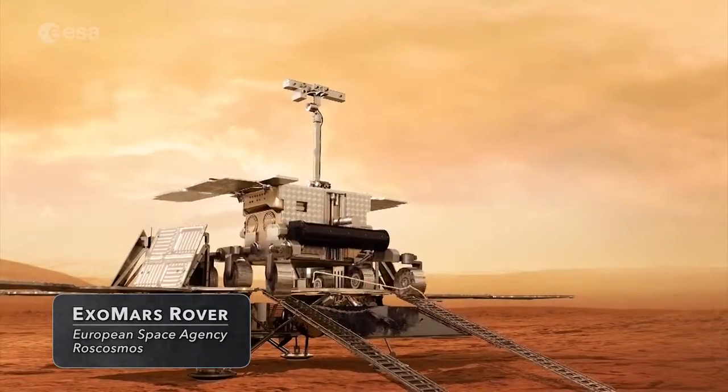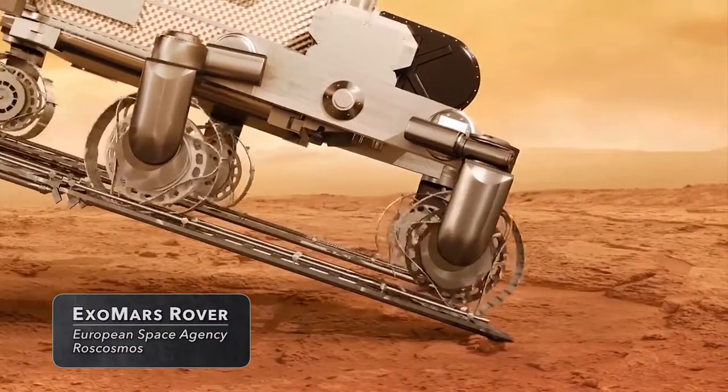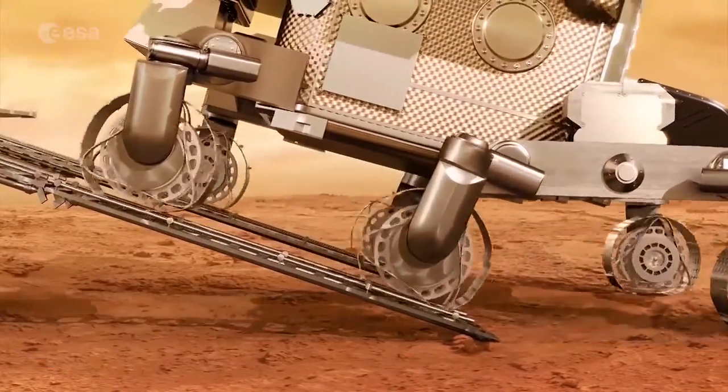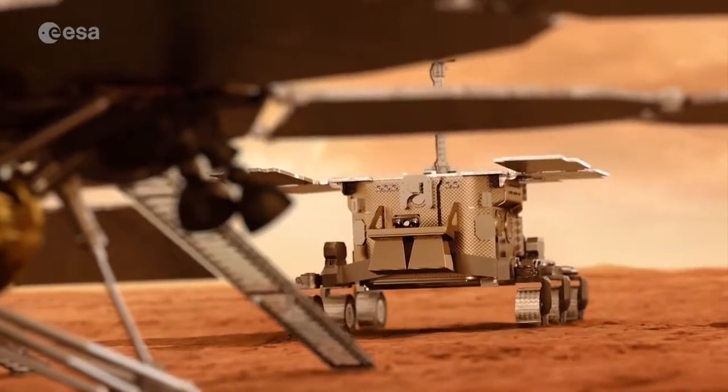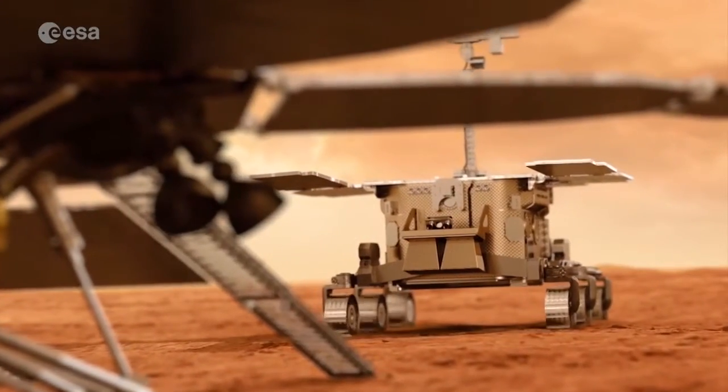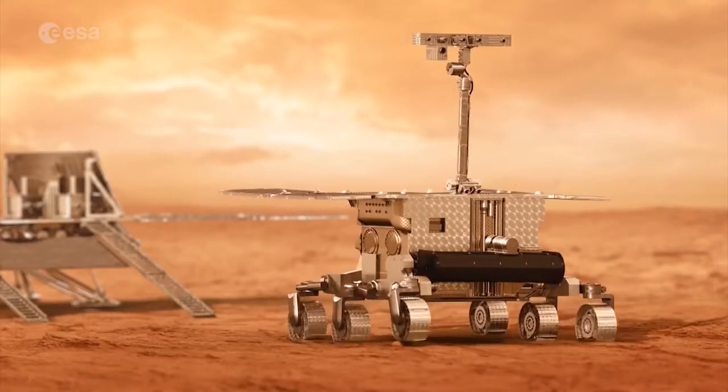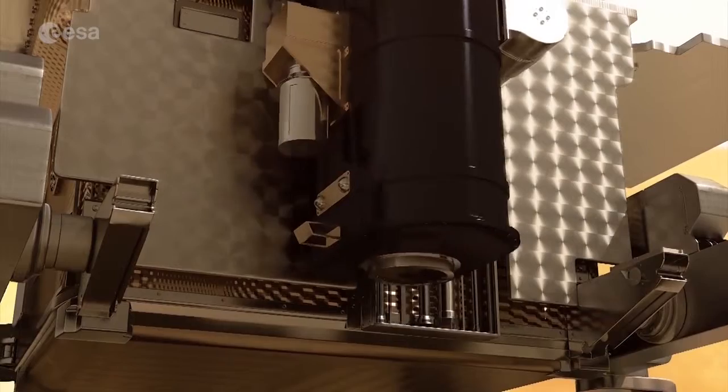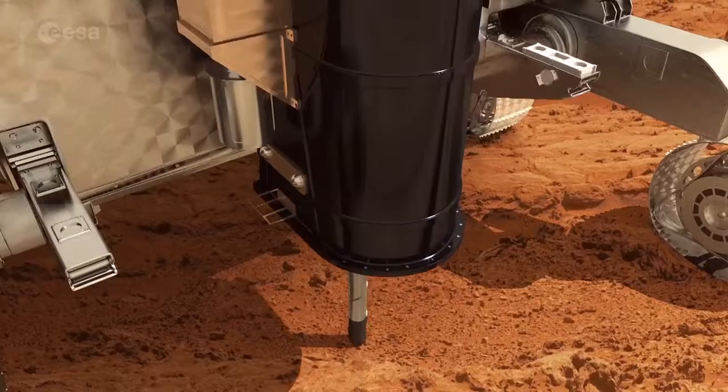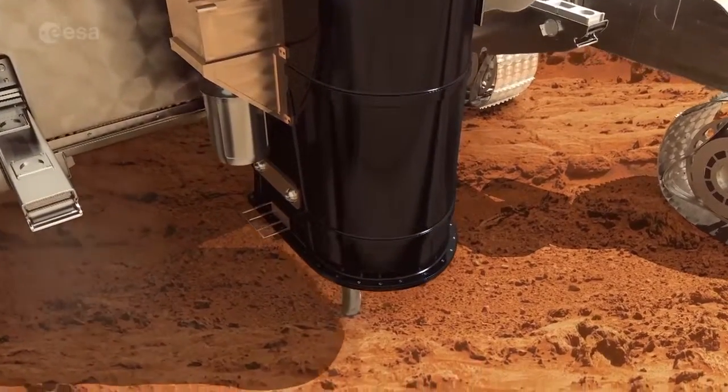As it descends from its landing platform, ExoMars will embark on an enterprising mission to uncover buried signs of past or present life. The Martian surface is a harsh environment bombarded with cosmic radiation, but the subsurface could offer better protection. For this reason, ExoMars is equipped with an extending drill that can retrieve samples from up to 2 meters below the surface.